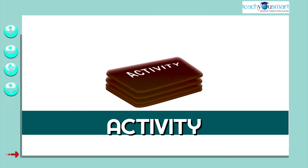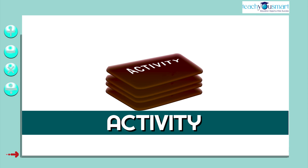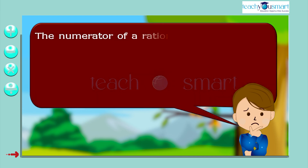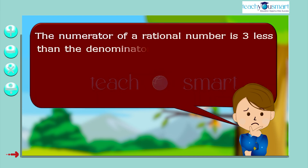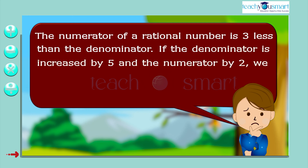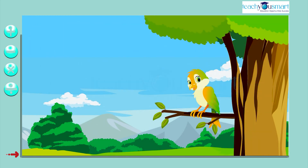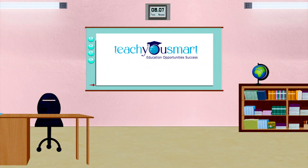Before winding up, let's check how much you understood by doing an activity. The numerator of a rational number is 3 less than the denominator. If the denominator is increased by 5 and the numerator by 2, we get the rational number 1 by 2. Find the rational number. That's all about the chapter on linear equations in one variable. From this, we understood that linear equations play an important role in our daily life. See you all in the next class.